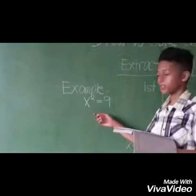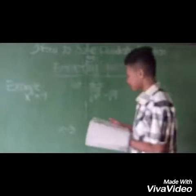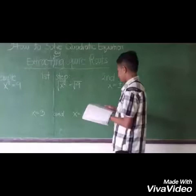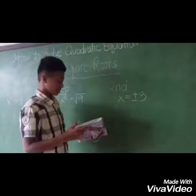The first step is to determine the possible roots. So, square root of x squared equals square root of 9. The square root of x squared is x, and the square root of 9 is 3. So it is written as x equals positive or negative 3.